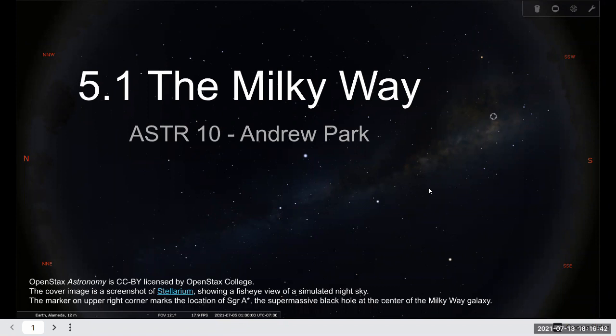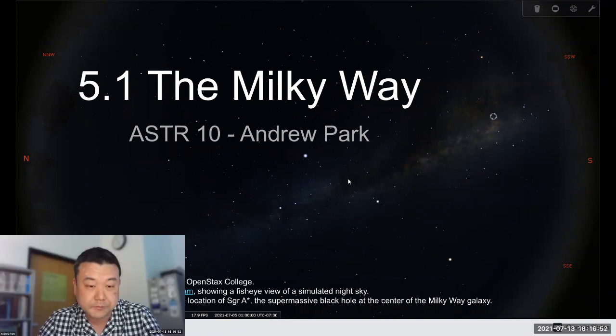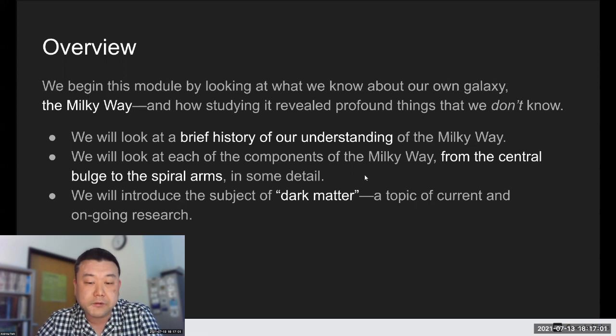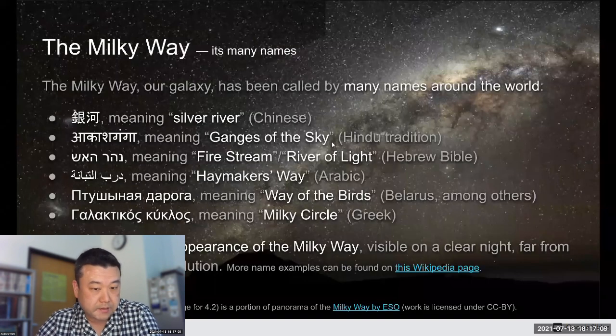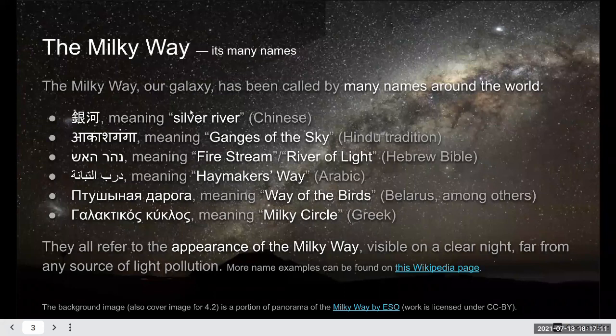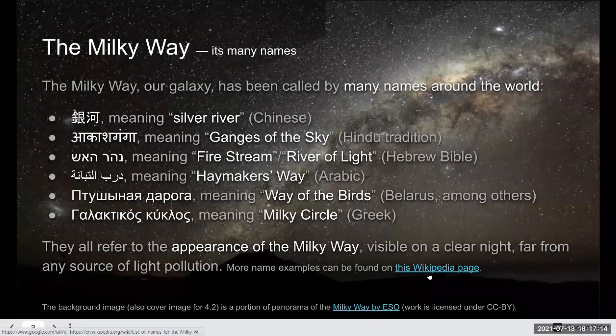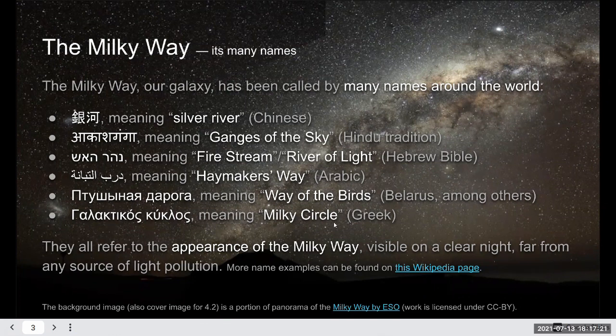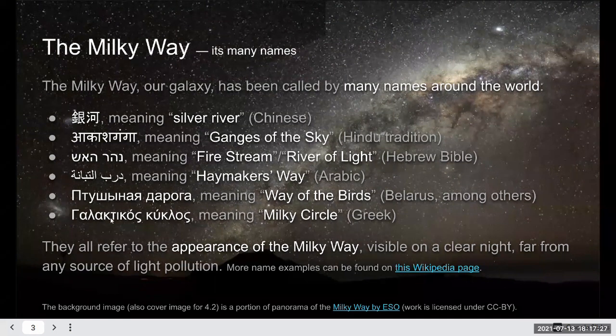If you can somehow find the Sagittarius constellation and look in that direction, that will be where center of our galaxy is. And it's a very interesting story of how people figured out what the structure of the Milky Way is. Milky Way has been seen for a very long time. I got this list of names from this Wikipedia page. Of all these, I can only pronounce the last one, Galaktikos Koukoulos in Milky Circle in Greek.